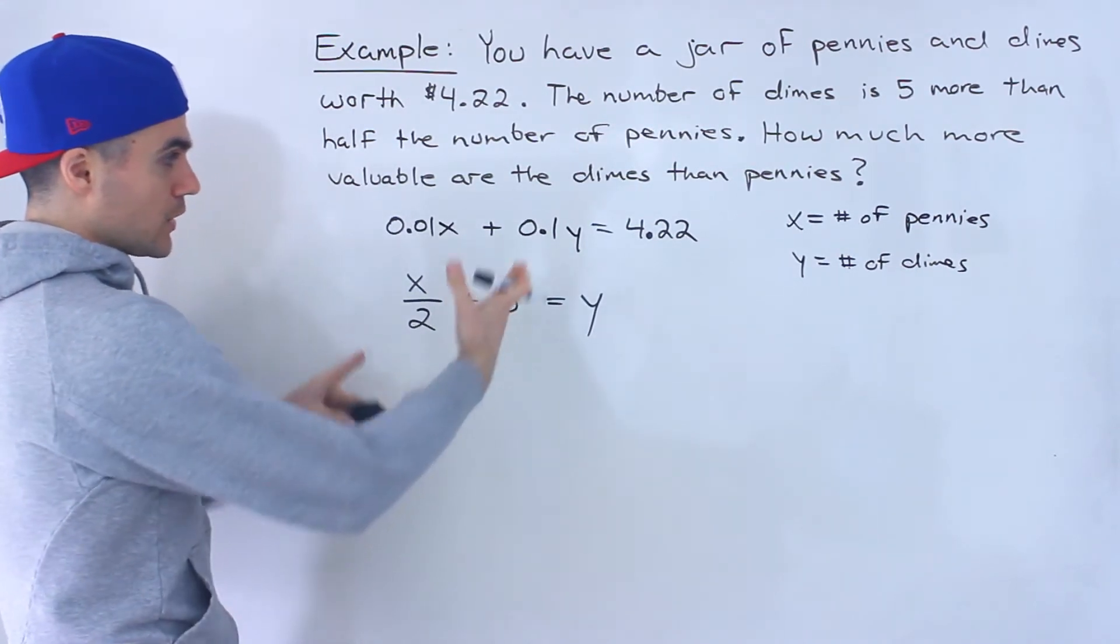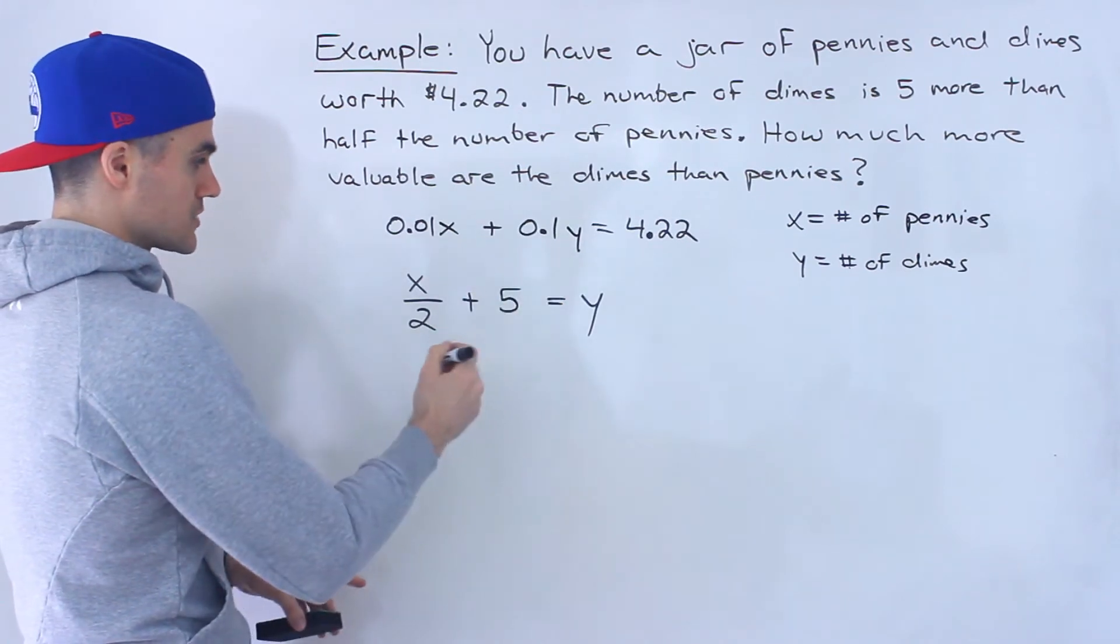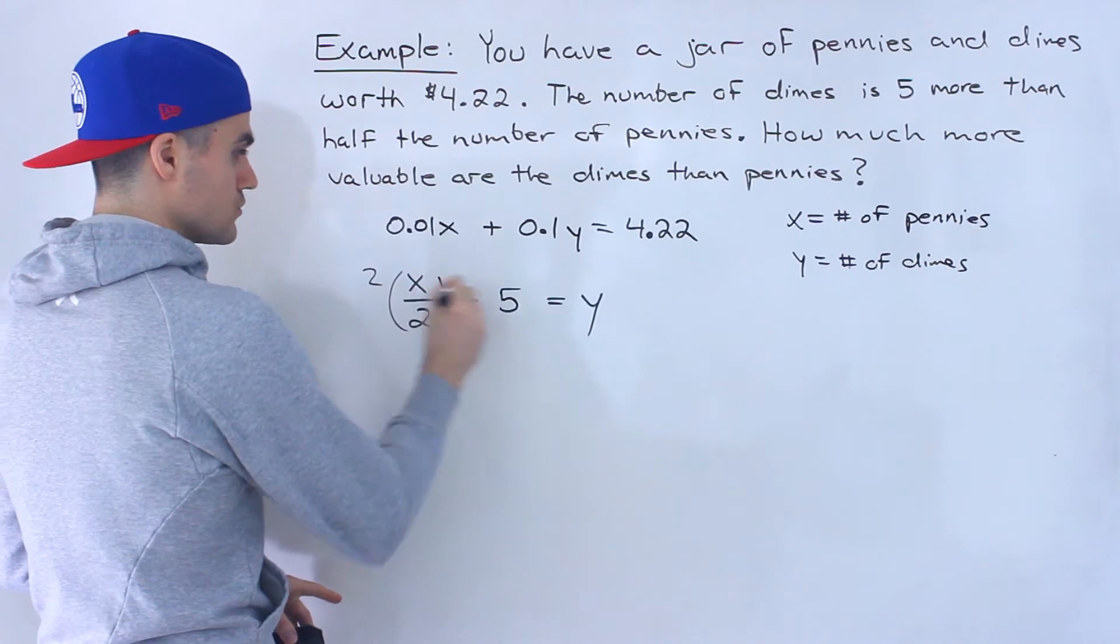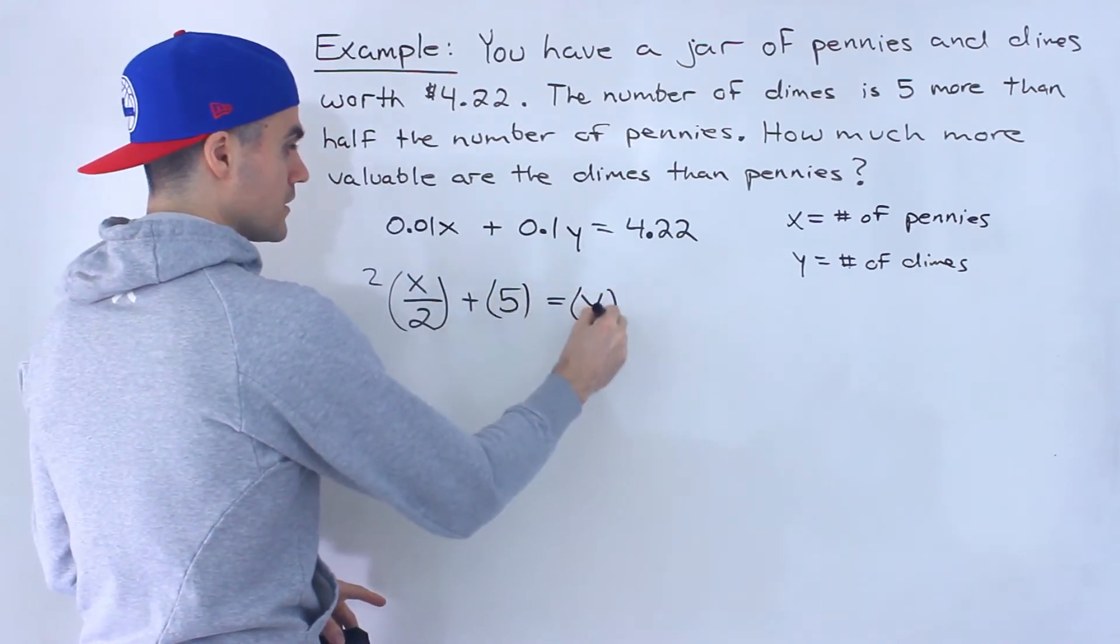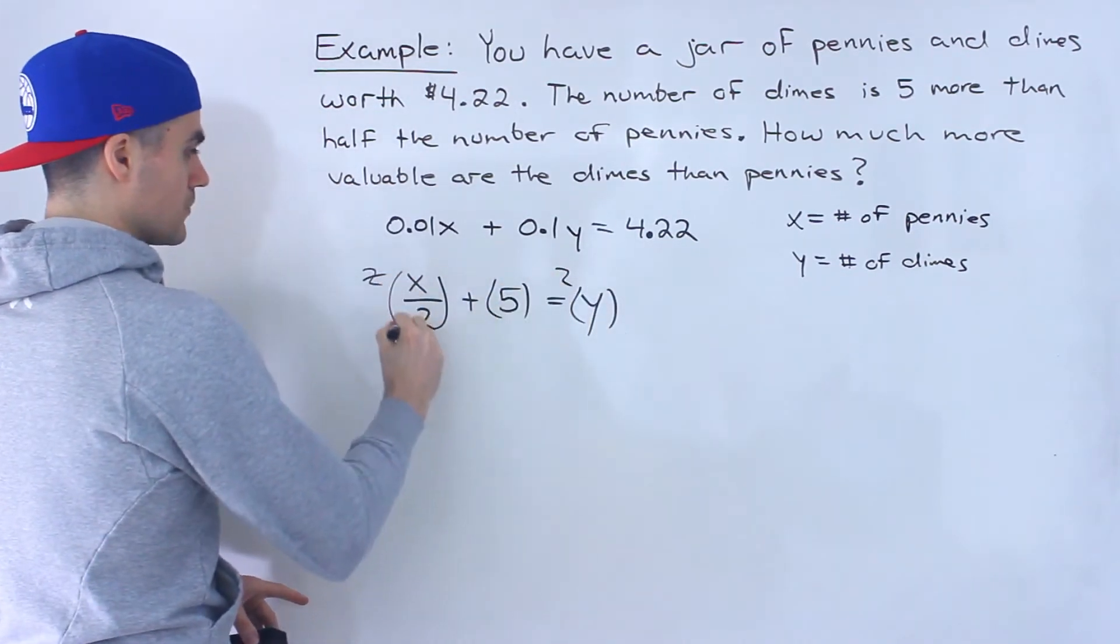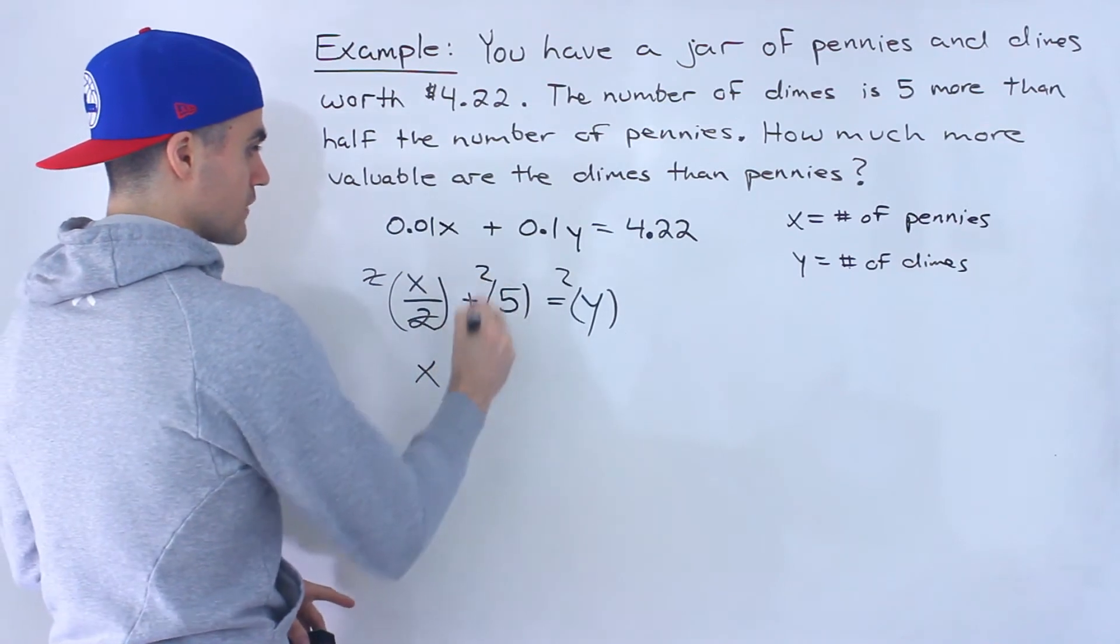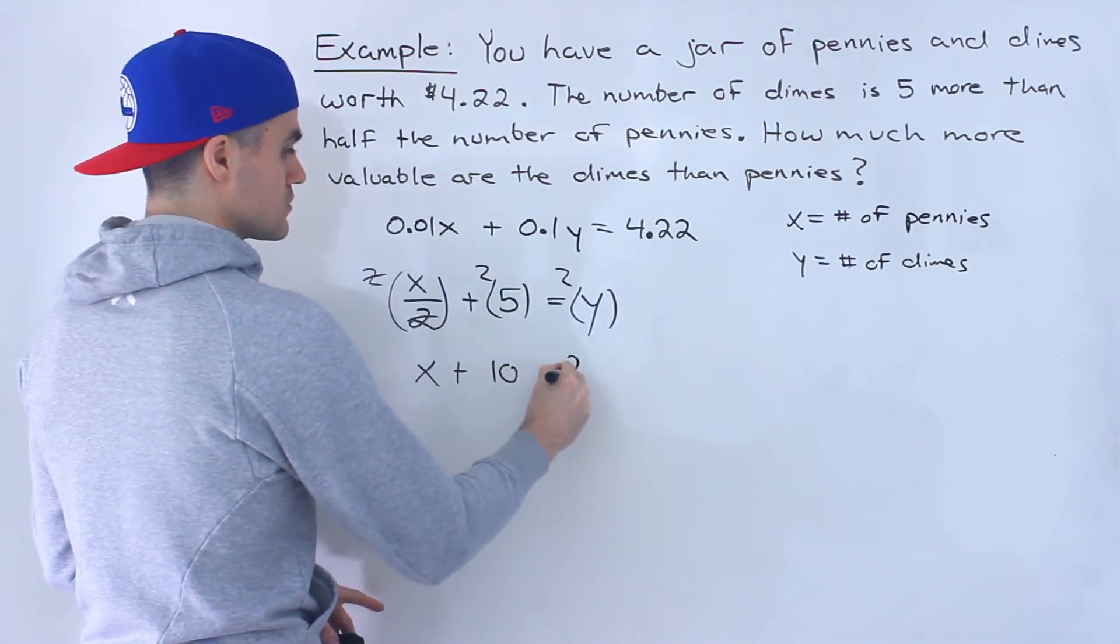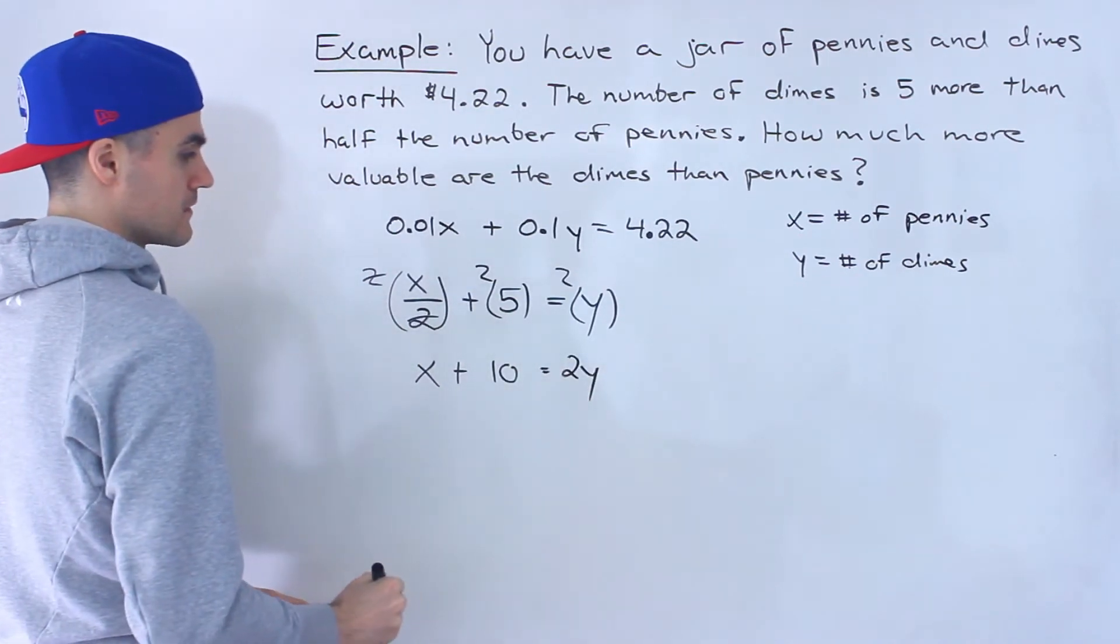So from here, now we got two equations with two unknowns we could solve. What I'm going to do, first thing I'm going to multiply everything by 2 over here to get rid of this denominator. So we would end up with x—sorry, the 5 gets multiplied by 2 as well—so we'll have x plus 10 equals 2y.